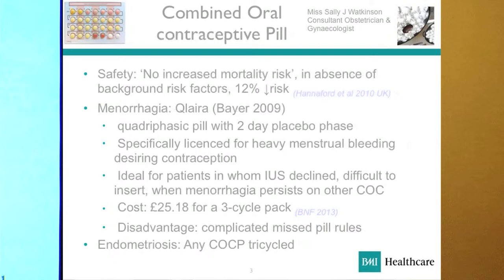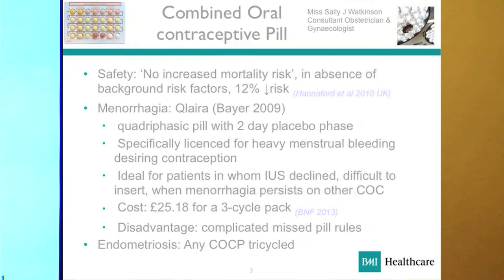Qlaira — that's the correct pronunciation — is a relatively new product specifically licensed for menorrhagia. It may be useful in women who are happy taking the pill but still feel their periods are too heavy. There are actually four different strengths of slightly different coloured pills, giving a more physiological pattern to the hormone. The downside is that if you miss a pill, it's quite complicated to advise what to do because it depends which pill you miss. It costs £25 for a three-cycle pack — fairly competitive.